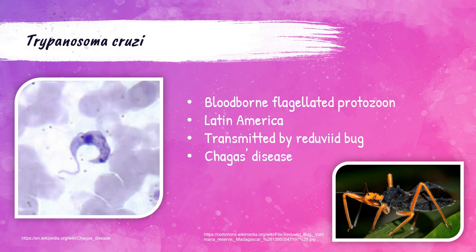Trypanosoma cruzi is another blood-borne parasite present in Latin America, transmitted by the reduviid bug. This causes something called Chagas disease, characterized by swelling, fever and fatigue, headache, rash, etc. This is the parasite you will see in the peripheral blood smear for a patient with Trypanosoma cruzi infection.